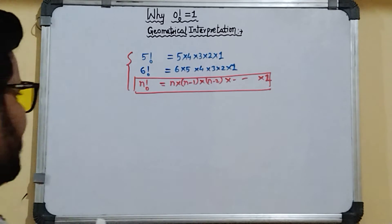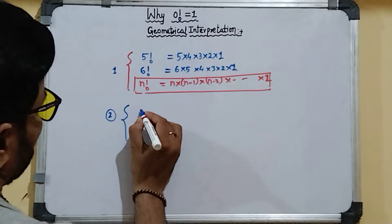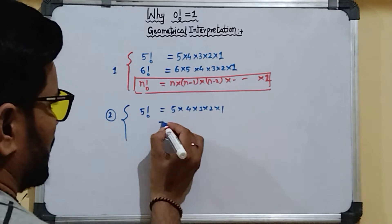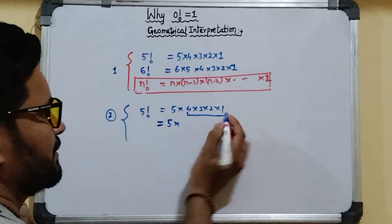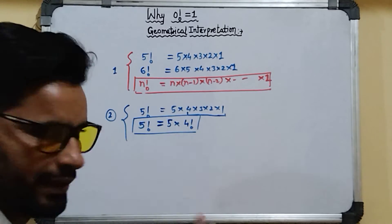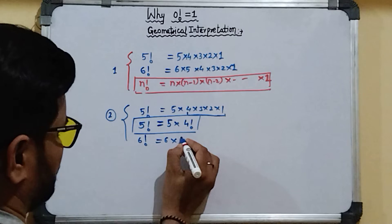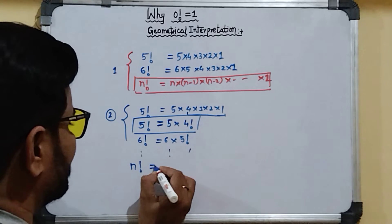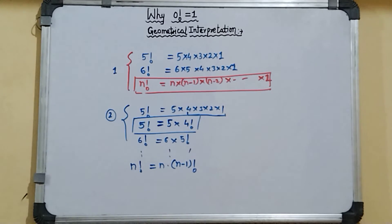Now, the second important thing: suppose you have factorial 5, then you can write it as 5 × 4 × 3 × 2 × 1. If we separate the 5, the remaining part — 4 × 3 × 2 × 1 — can be written as factorial 4. Similarly, if we write factorial 6, then we can write it as 6 × factorial 5.